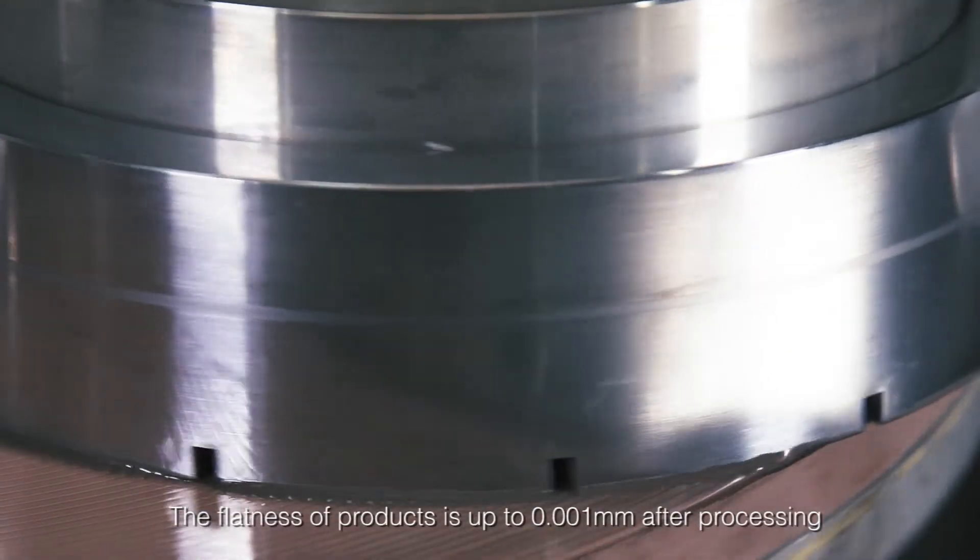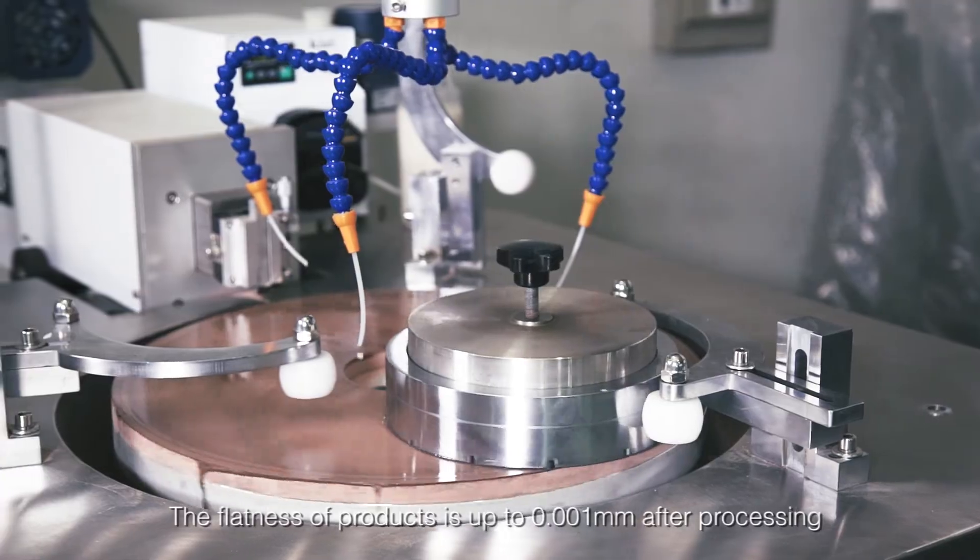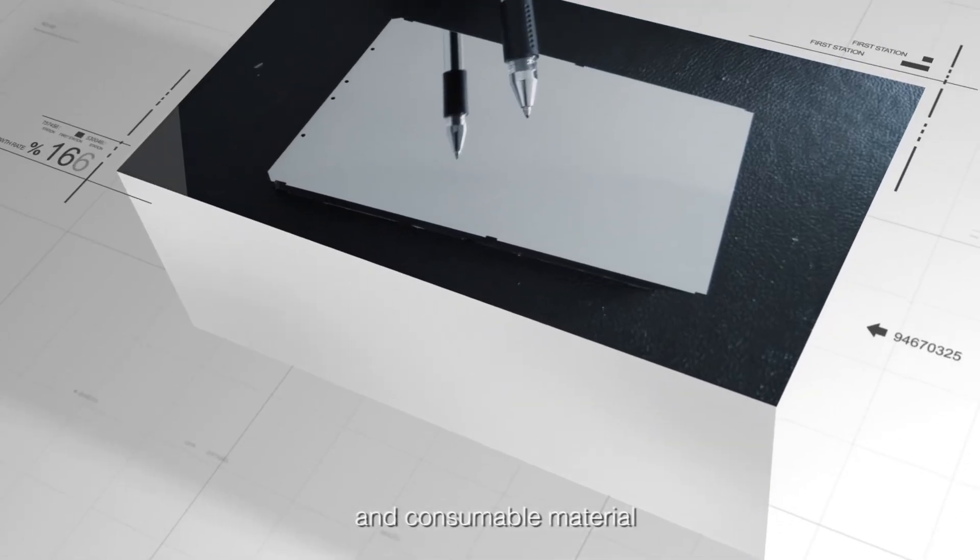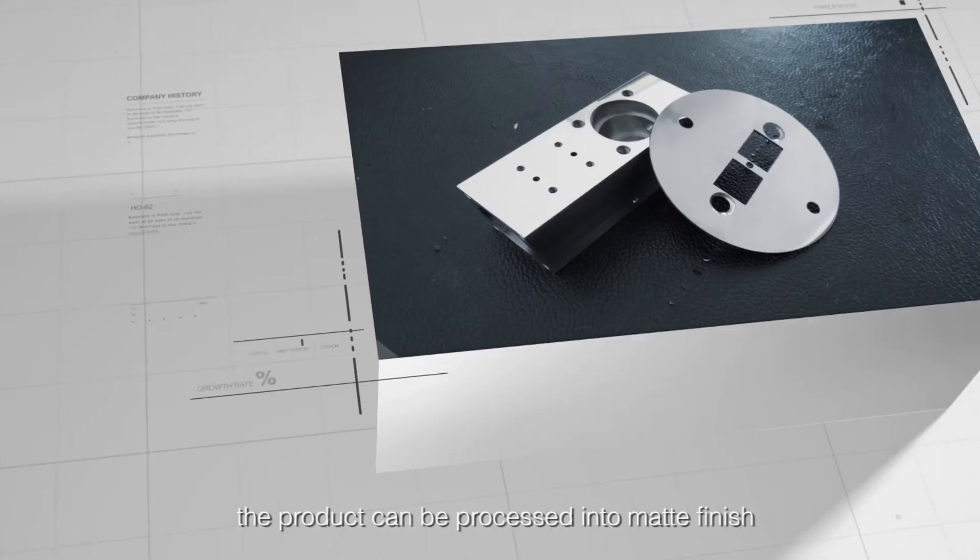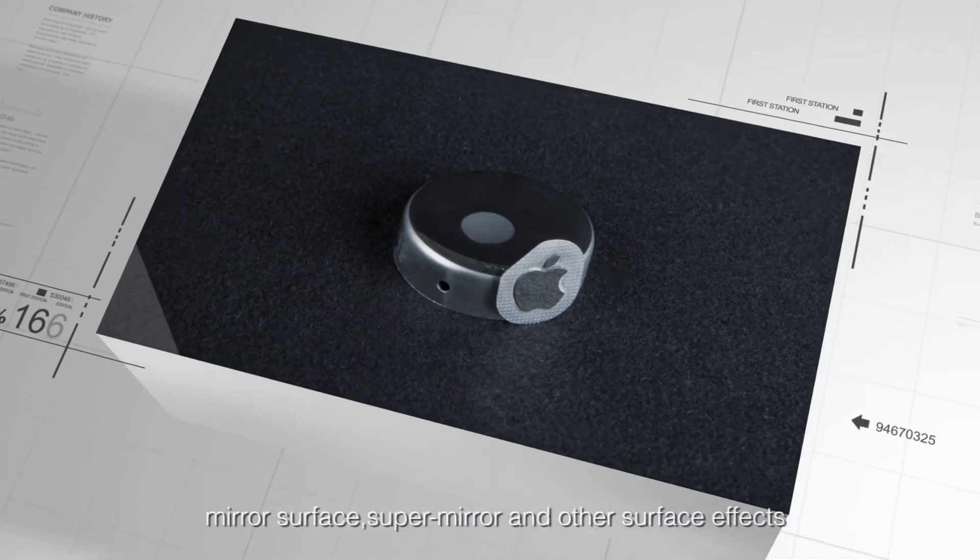The flatness of products is up to 0.001 mm after processing. Through the collocation of grinding desk and consumable material, the product can be processed into matte finish, mirror surface, super-mirror, and other surface effects.